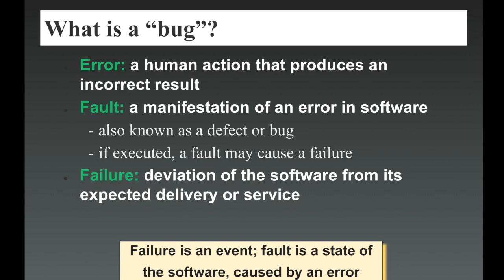We say that is a failure of that particular product. Failure is the deviation of the software from its expected delivery or service to the actual user or customer. Failure is an event or state of that particular software caused by an error. So these three words — error, fault, and failure — are interconnected.